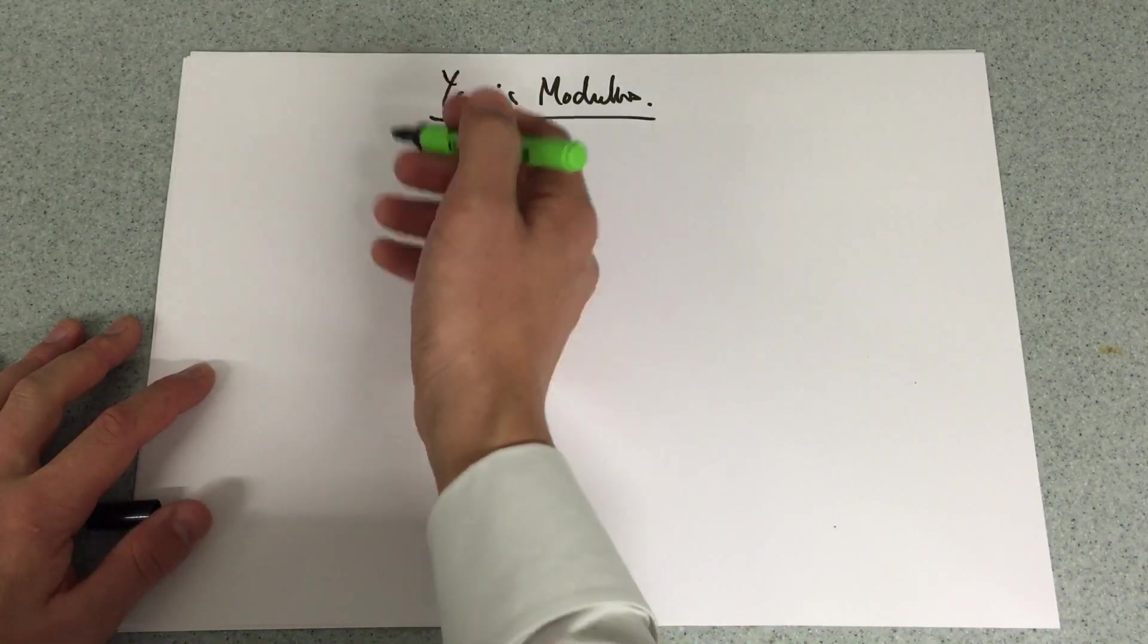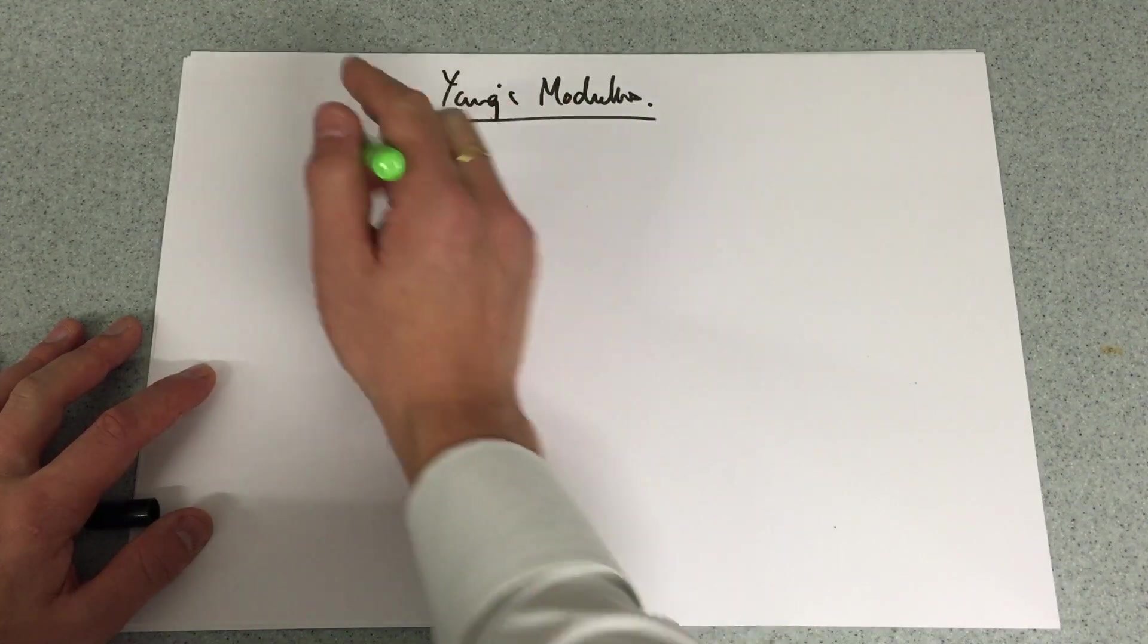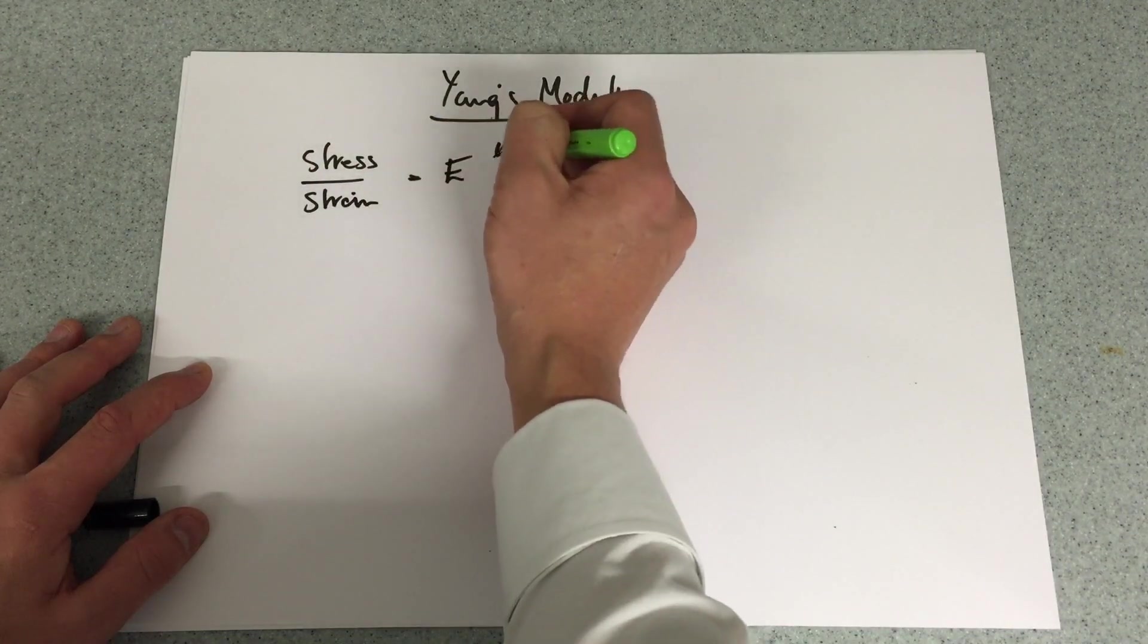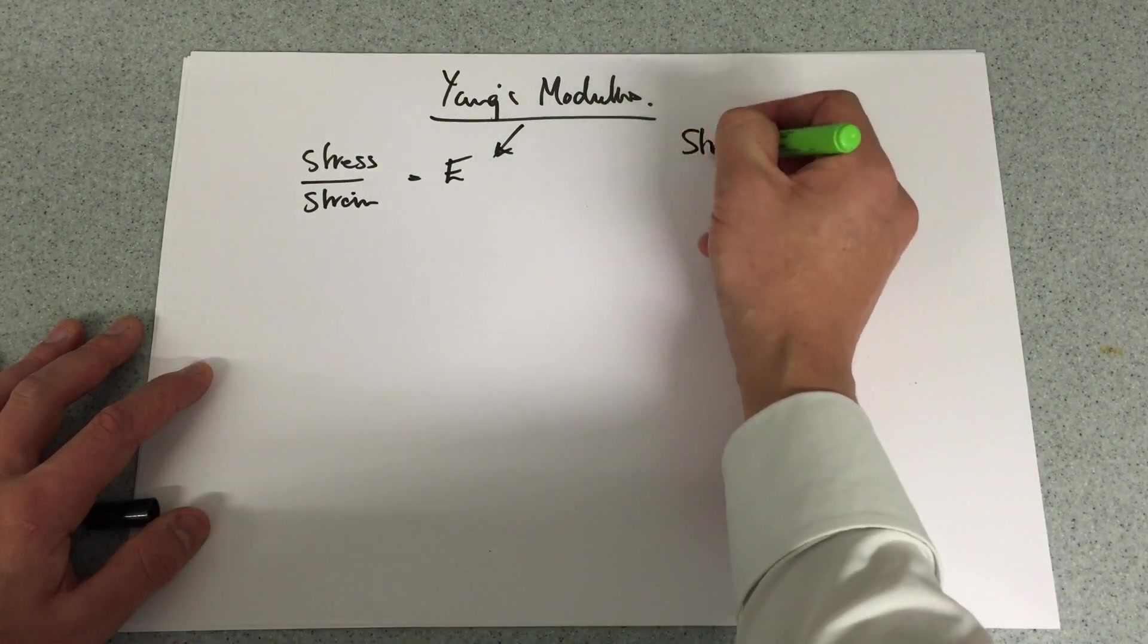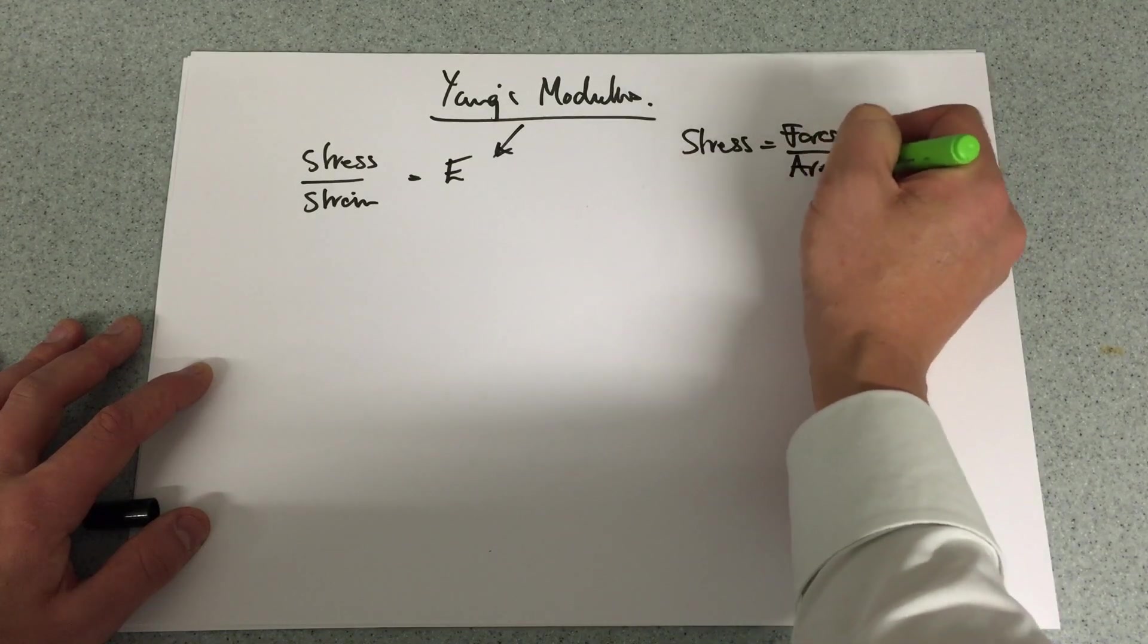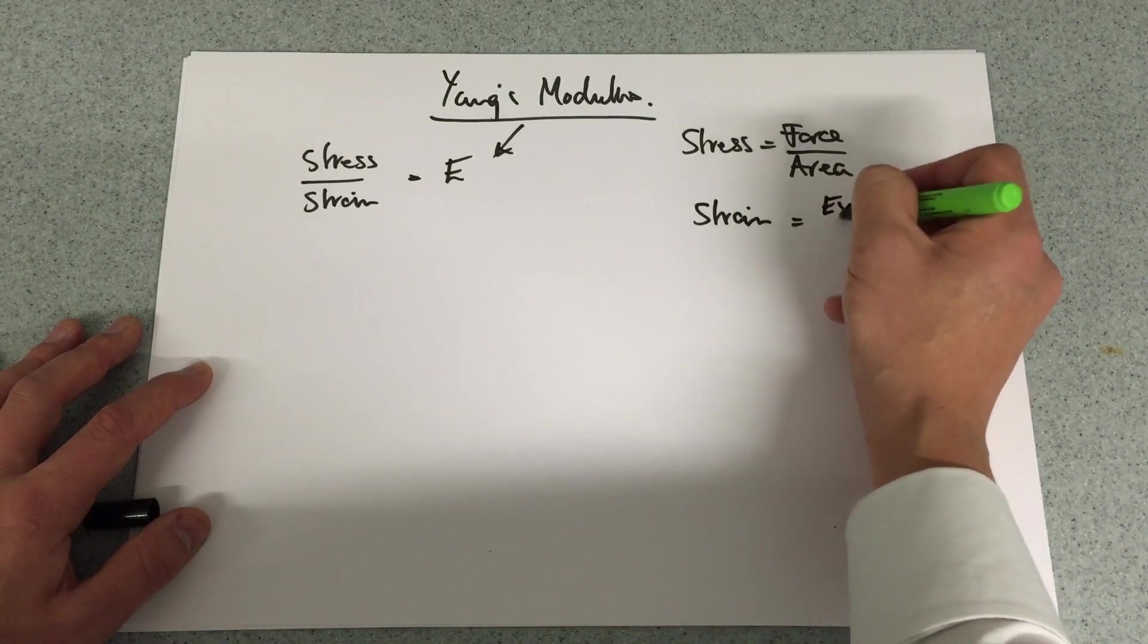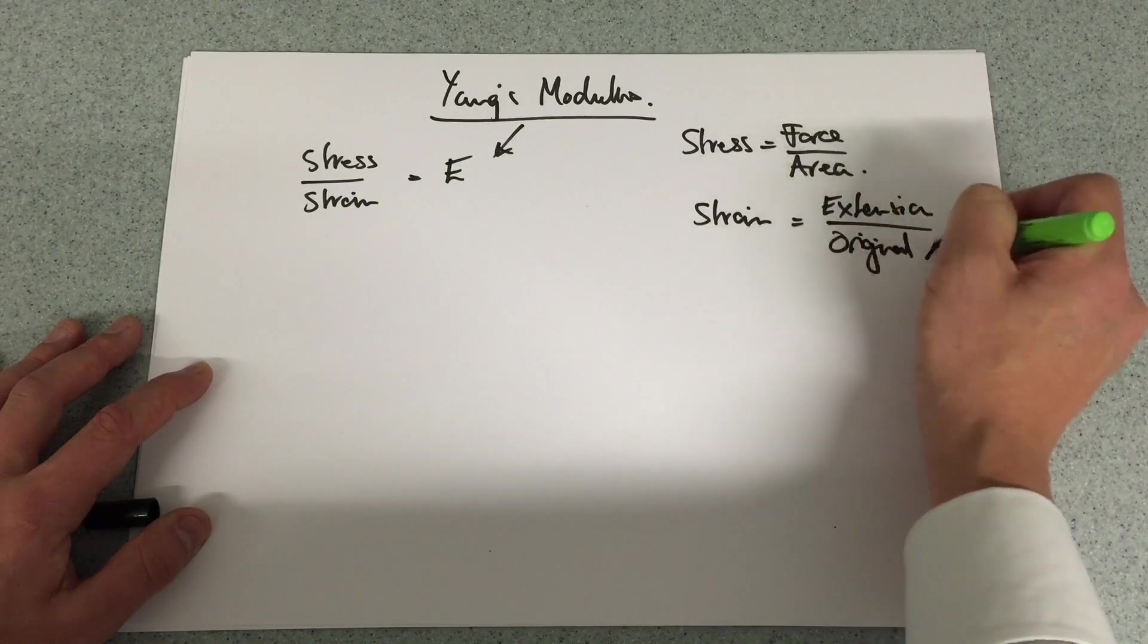I'm sure there's a theory video on this that you ought to look at before. However, in order to work out the Young's modulus, what we really need to work out is the stress of a material divided by the strain, which gives us this Young's modulus. So how do we work out stress and how do we work out strain? Well, stress is given by the force divided by the cross-sectional area and strain is equal to the extension divided by original length.